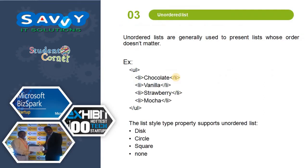The next one is unordered list. Unordered lists are generally used to present lists whose order does not matter. The unordered list is used with UL and the list item is the same LI tag. The list-style-type property for unordered lists supports: disk, circle, square, and none.